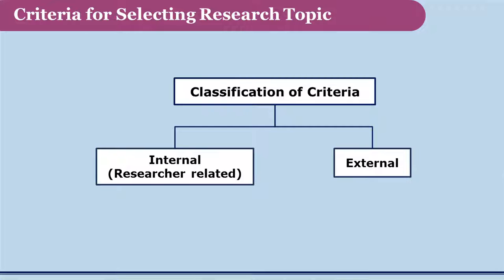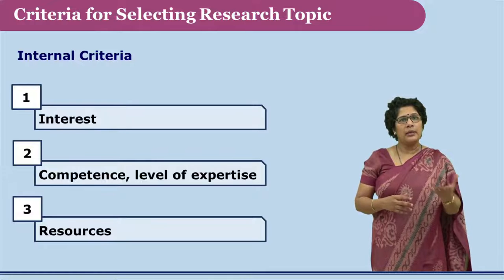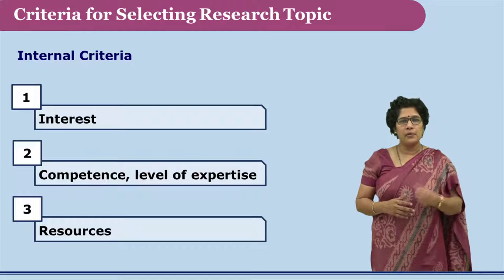The first category is the internal criteria — all those factors which are related to the researcher himself or herself. The other category is the external criteria — all those factors which are outside the researcher but have a bearing on the research. We shall discuss each of these criteria one by one, starting with the internal criteria.